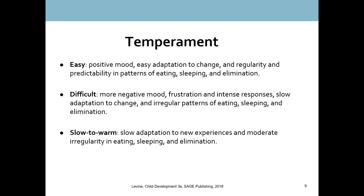To go over the percentages: 40% of their sample was easy, 10% difficult, and 15% slow to warm up. Those numbers don't add up to 100, so about one-third — 35% more specifically — were left unclassified because they had a mix of temperaments or displayed more than one style over time. The researchers only included babies that clearly represented one of the named profiles.